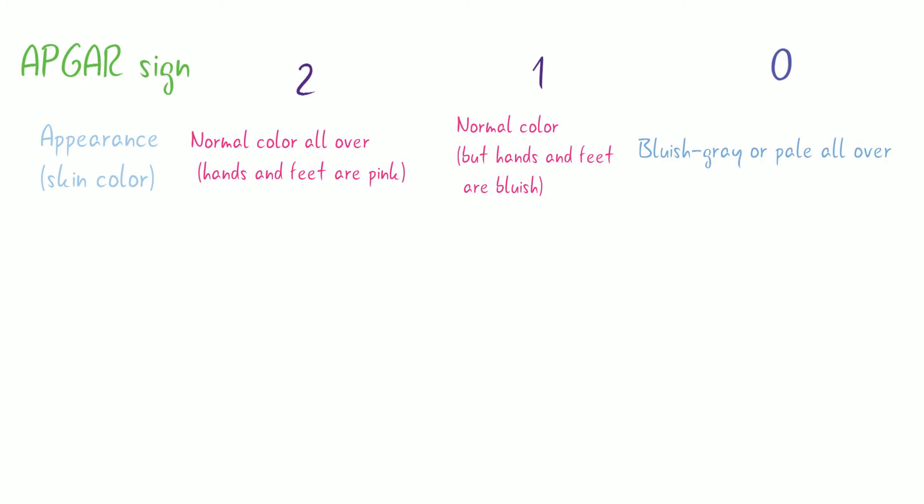For Pulse, a score of 2 is given for normal heart rate above 100 beats per minute. 1 is given for below 100 beats per minute. 0 is given for absent pulse.